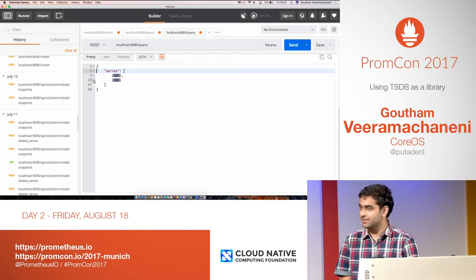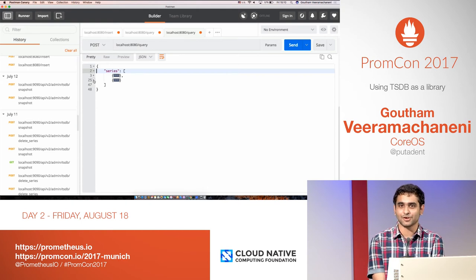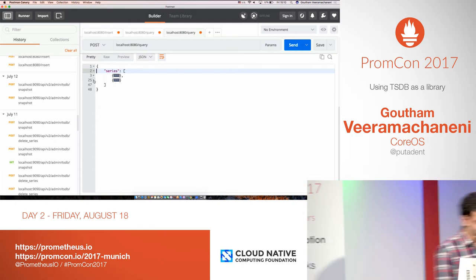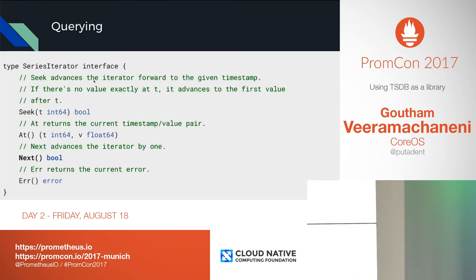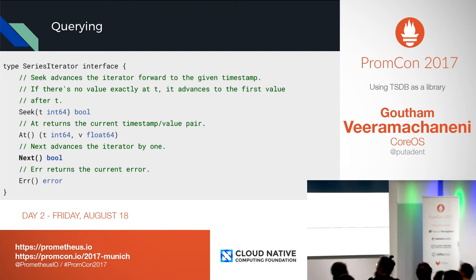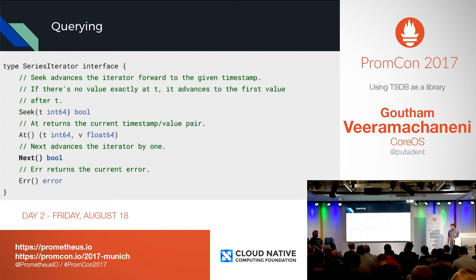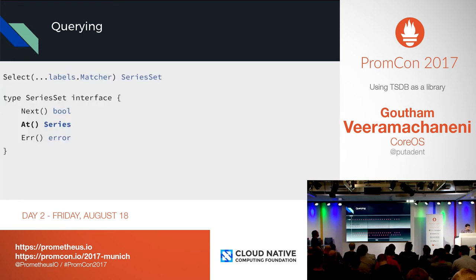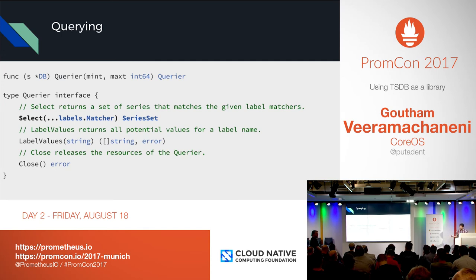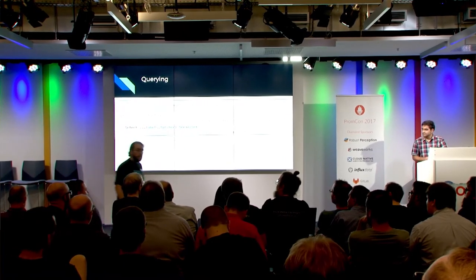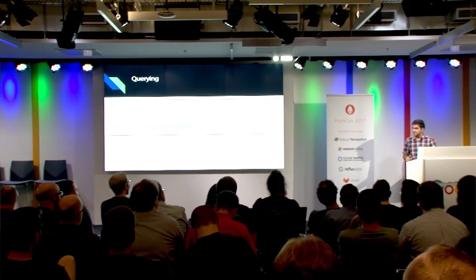I think I'm quite early. Any questions? Anywhere I lost you that I can go back to? — Please show the code when you calculate ranges. So when you create the querier, you actually pass in the min time and max time. It's built in there — you actually don't do any of the merging yourself; the database internally does the merging for you. Is your example code online somewhere? I will push it along with my slides.